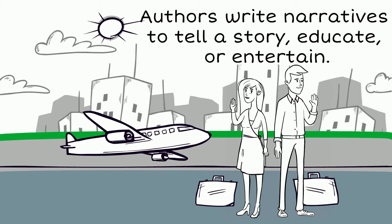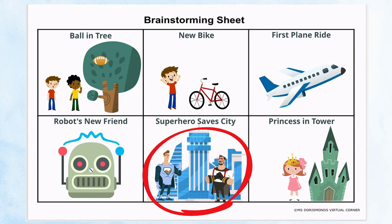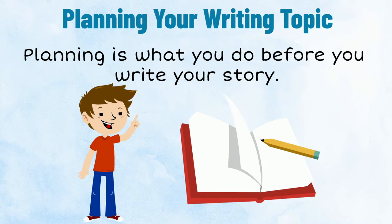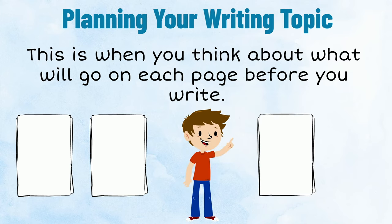I have already brainstormed a narrative writing topic about a superhero that saves a city from an evil villain. Now I will make a plan for my narrative. Planning is what you do before you write your story — this is when you think about what will go on each page before you write.